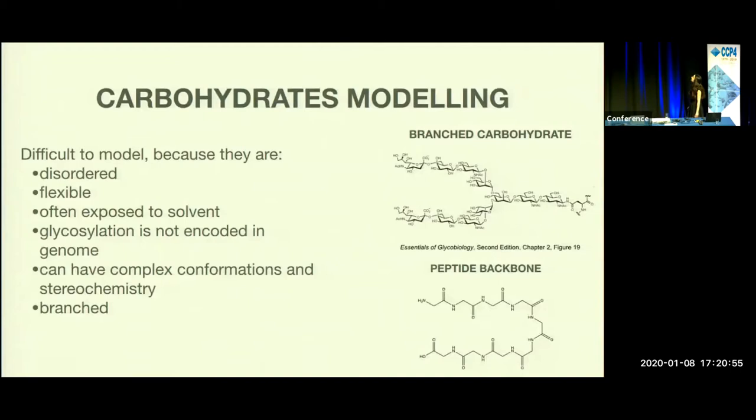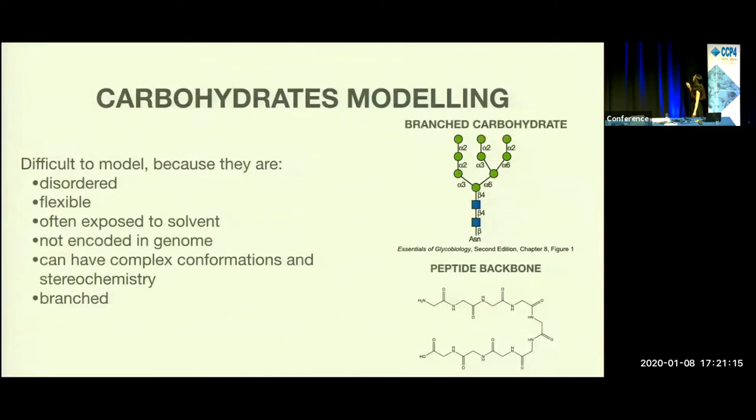As you can see here, this is an example of a branched carbohydrate. When comparing it to a peptide backbone, it's not possible to have a backbone the same way we have with proteins, which makes carbohydrates more difficult to model. In addition to that, branched carbohydrates can be even more complex with multiple branching points, which further complicates modeling them.